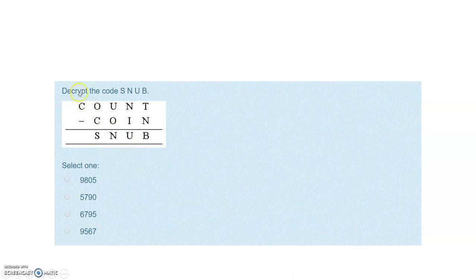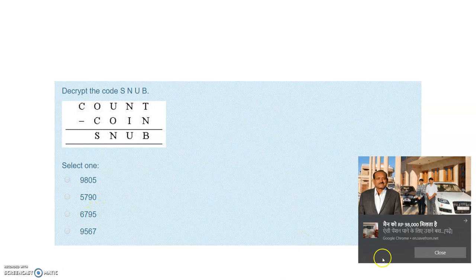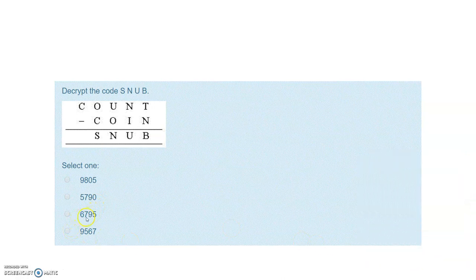The problem is: decrypt the code SNUB. It is a subtraction problem — COUNT minus COIN equals SNUB. The four options given are: 9805, 5790, 6795, and 9567. We will try putting options in and checking.